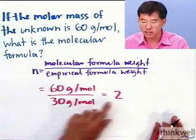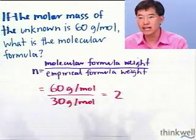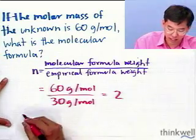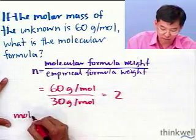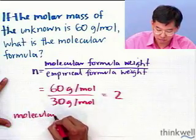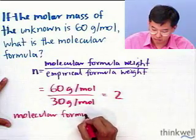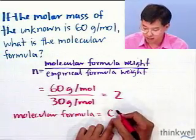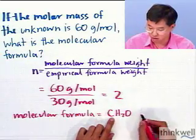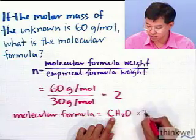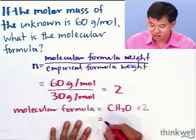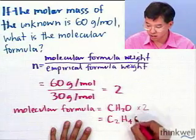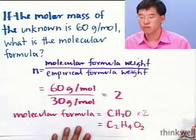What is this 2? This tells us how many empirical formulas there are in the molecular formula. In other words, the molecular formula is equal to CH2O times 2, or C2H4O2.